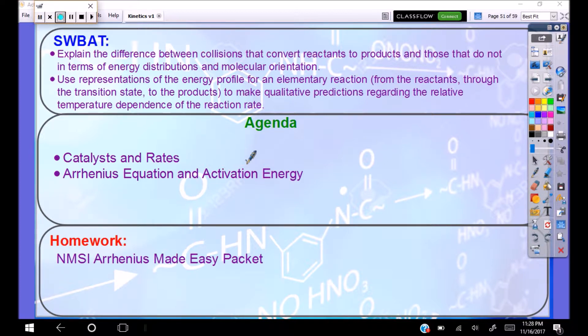The lab involves activation energy in the Arrhenius equation. So we're going to help explain the difference between collisions that convert reactants to products and those that do not in terms of energy distribution and molecular orientation. We're also going to use representations of our energy profile for an elementary reaction from the reactants to the transition state to the products to make qualitative predictions regarding the relative temperature dependence of the reaction rate.